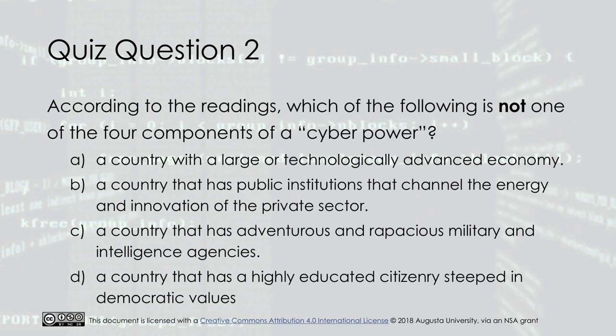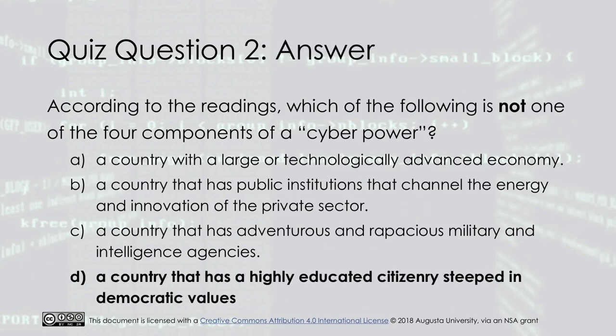According to the readings, which of the following is not one of the four components of a cyber power? A. A country with a large or technologically advanced economy. B. A country that has public institutions that channel the energy and innovation of the private sector. C. A country that has adventurous and rapacious military and intelligence agencies. D. A country that has a highly educated citizenry steeped in democratic values. The answer is D: a country that has a highly educated citizenry steeped in democratic values.